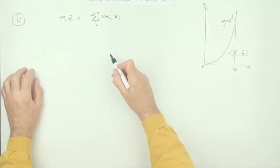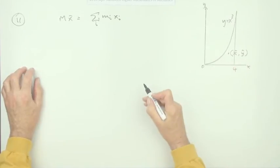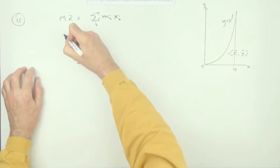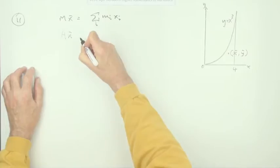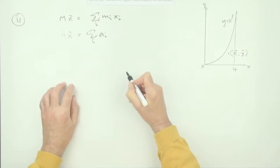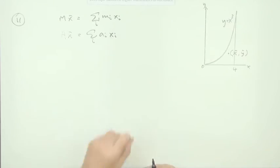Because since it's a uniform lamina, you know that the mass will be equal to the mass per unit area times the area. So those would cancel out from both sides. So it's really just going to be the area of the whole shape times x̄ will be the sum of the areas of the individual little bits and pieces times the distance to their centers.